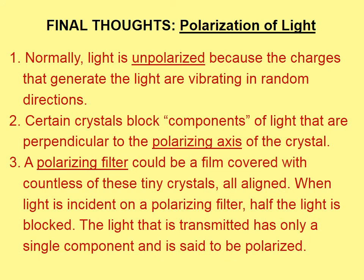Normally, light is unpolarized because the charges that generate the light are vibrating in random directions. Certain crystals block components of light that are perpendicular to the polarizing axis of the crystal. A polarizing filter could be a film covered with countless tiny crystals all aligned. When light is incident on a polarizing filter, half the light is blocked, and the light that is transmitted has only a single component and is said to be polarized.